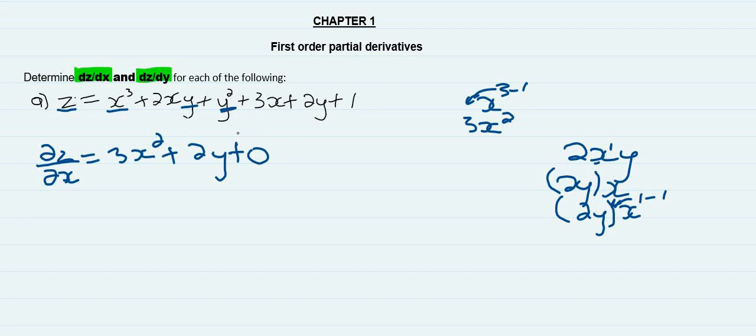We see that this Y squared, since there's no X in that equation, the derivative of a constant becomes 0. We see that there's no X in that equation, therefore the derivative of a constant is 0.